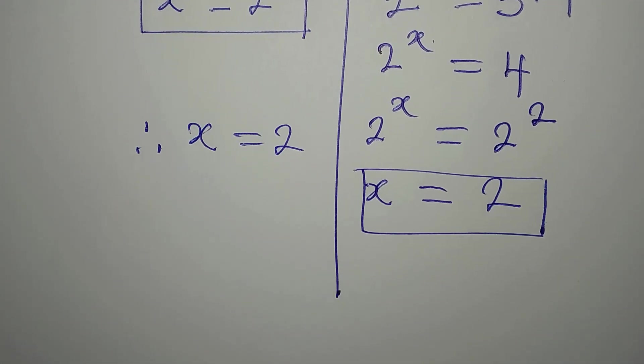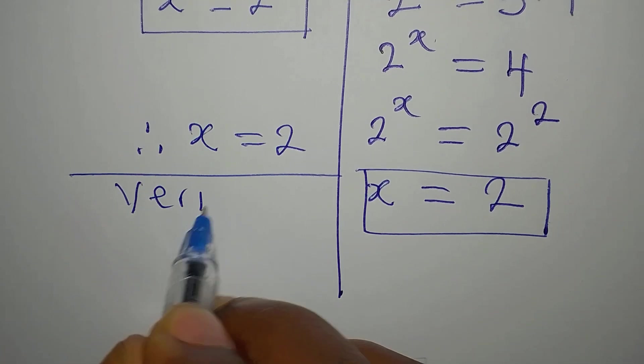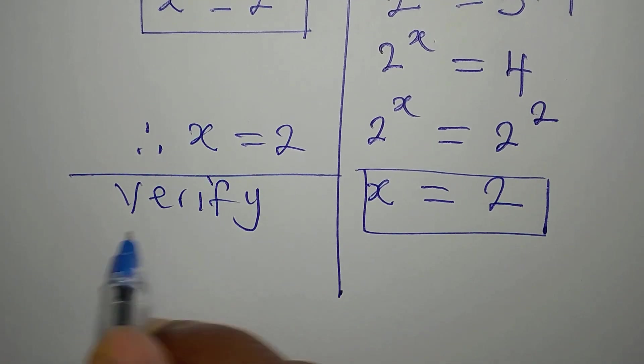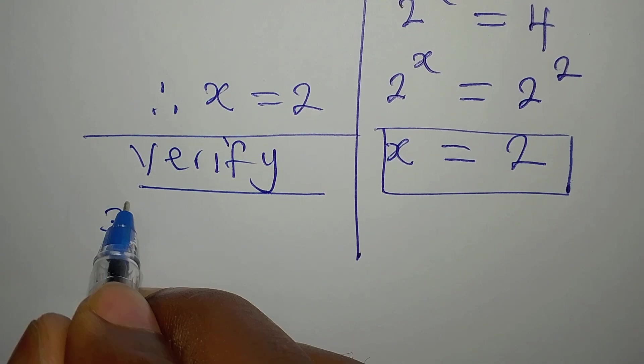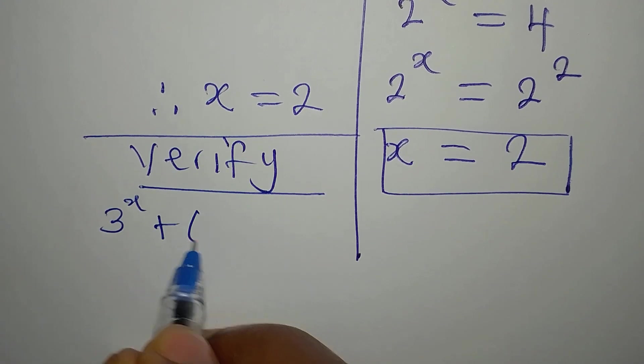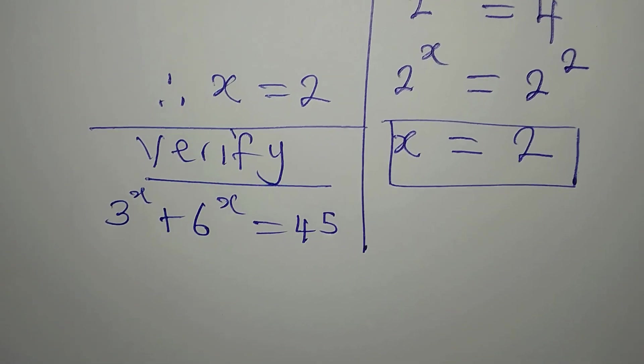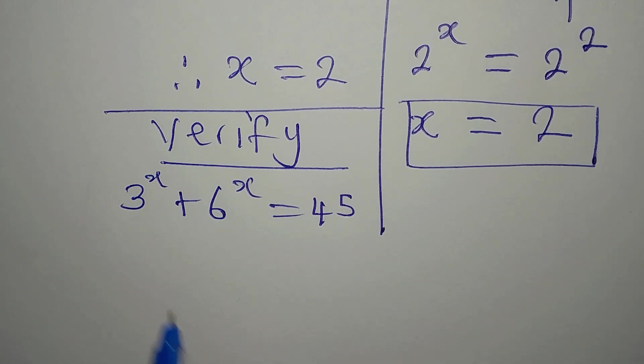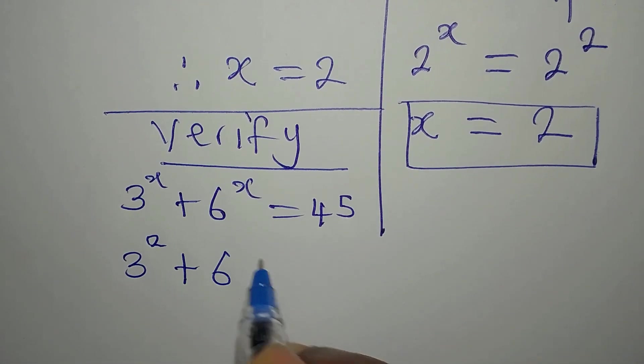And like I told you, we always verify. Like I always tell you, we do verify. The equation is 3 to the power of x plus 6 to the power of x equals 45. Now, if we put x as 2, then we have 3 squared plus 6 squared.